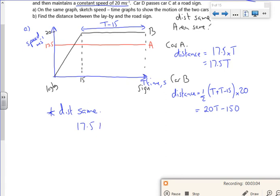So 17.5T is equal to 20T minus 150. If I take the 150 over, and take the 17.5 over, that's going to give me 60. So T is 60 seconds.